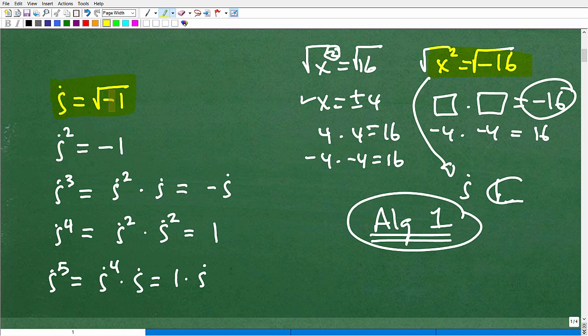Okay, so i, by definition, is equal to the square root negative one. If you didn't know that, now you know that. All right, so what happens if we square this i? In other words, I have an i squared. Well, if I square both sides, I end up with the i squared, I'm going to be left with negative one. That radical's going to go away, right? So I'm going to square both sides and I end up with i squared is equal to negative one.